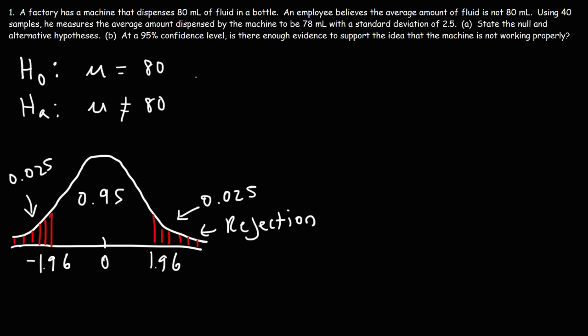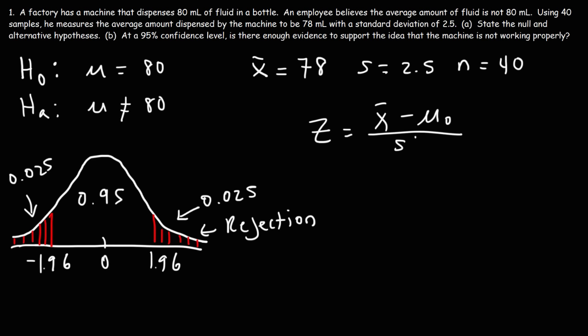In order to determine if we should reject the null hypothesis, we need to calculate the z-value and compare it to the critical z-value of 1.96, positive or negative. Let's write down what we know: the sample mean is 78, the sample standard deviation is 2.5, and the sample size is 40. Since the sample size is greater than 30, we can use the normal distribution and get the z-score. We're going to use the formula: x-bar minus the hypothesized mean, over the sample standard deviation divided by the square root of n.